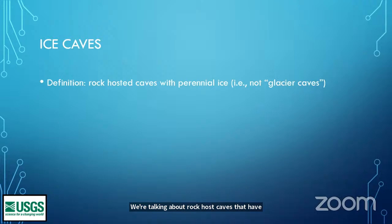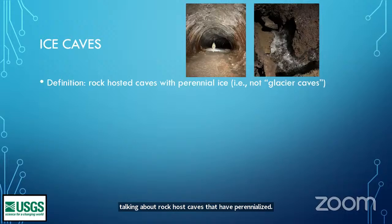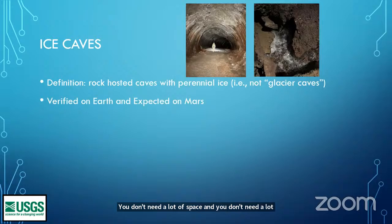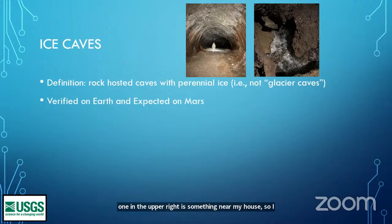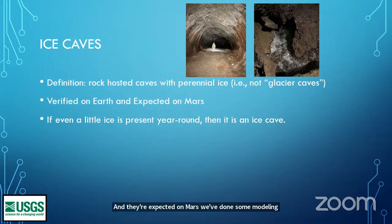Ice caves often happen in things like lava tubes or cold pits in the ground. You don't need a lot of space and you don't need a lot of ice. These have been verified on Earth — and they're expected on Mars. We've done some modeling for Mars and ice caves. You don't need huge amounts of ice in that cave to make it qualify as an ice cave; just a tiny bit is all that's needed.